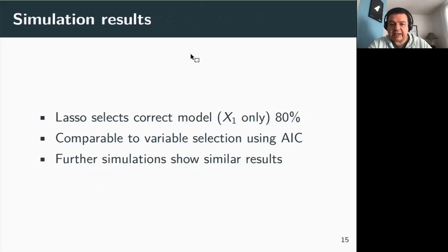What about the results? In 80% of the simulations, the lasso selected the correct model, that is the model with X_1 only, which is quite good. And this result is comparable, matches the performances we got with AIC for covariate selection. We did some additional simulations by varying the detection probability, the number of covariates, the number of sampling occasions. We also included some collinearity between the covariates, and the conclusion was similar. In fact, the lasso performed pretty well.